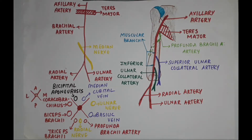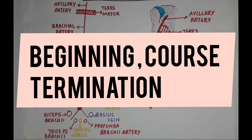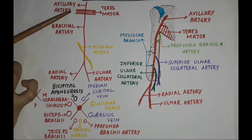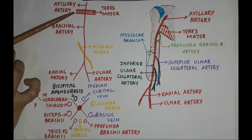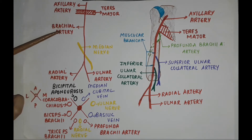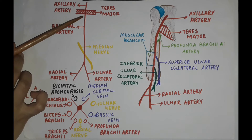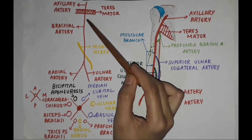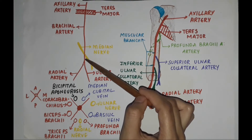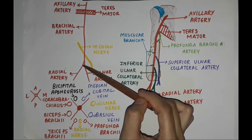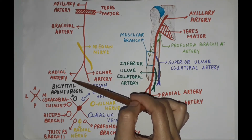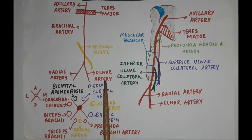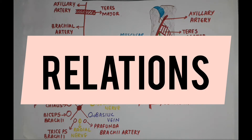Brachial artery: beginning, course, and termination. It is a continuation of the axillary artery below the lower border of the teres major muscle, and is known as the brachial artery. It runs downwards and laterally in front of the arm and reaches the cubital fossa to divide into two terminal branches, namely the radial artery and the ulnar artery.